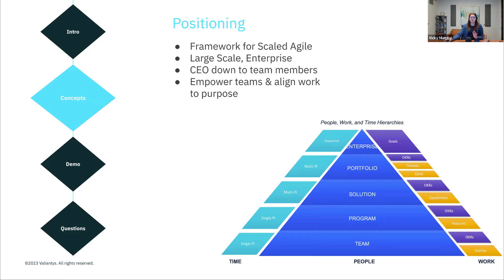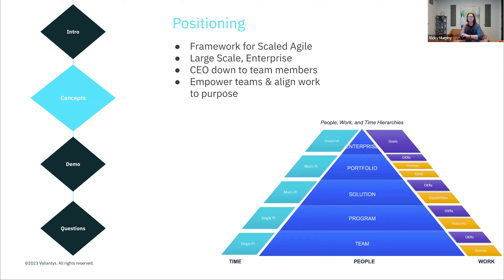When we talk about what Jira Align was designed for from a technical perspective, it was really designed to help us connect our strategy to our execution across the enterprise and support the various planning activities we do at each level. We've really seen Jira Align help organizations empower their teams by making work visible across the enterprise in real time and aligning work to purpose — getting everyone on the same page so we're able to align what we are doing at each level up to that top enterprise strategy.